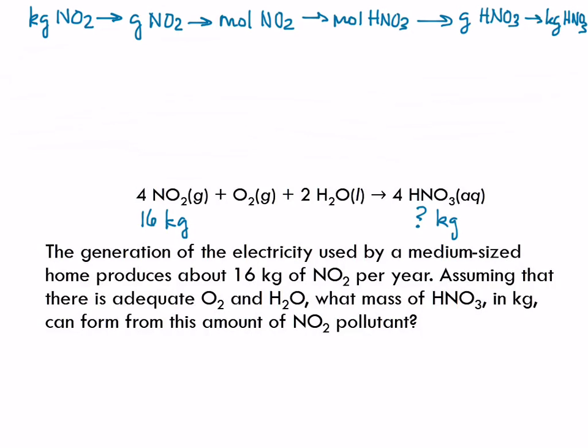Now, dimensional analysis. I'm going to set up all the units in a string, and then I'll put numbers in, and then I can get my calculator up. Each of these little steps is not difficult. The trick is learning how to put them all together successfully. So I have 16 kilograms of NO2. That's what I'm starting with. And then I need grams of NO2, and I'm going to have kilograms of NO2 on the bottom. Those are going to cancel.